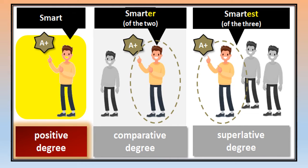In the first case, we say it is positive degree — he is not compared with anyone else. In the second picture, he is compared with someone else; there are only two. In the third picture, he is compared with more than one — that is known as superlative degree. So: positive when no comparison, comparative when comparison between two, and superlative when more than two. This is what we have learned in Standards 6, 7 and 8.